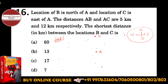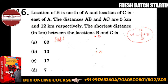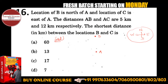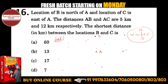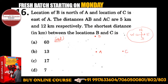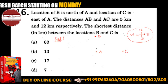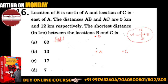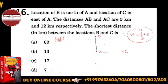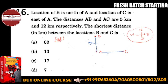These techniques are going to help you. So now, C is east of A — from A going east, here is C. This point is C, east of A. The distance is AB and AC: 5 km and 12 km.